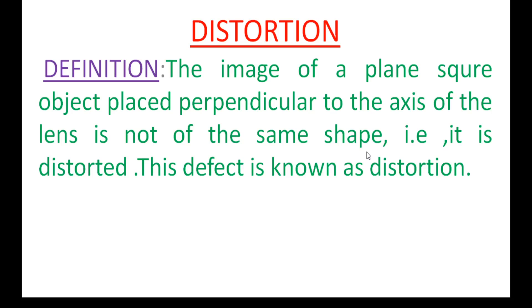What is distortion? This is also one type of aberration like chromatic aberration, spherical aberration, coma, and astigmatism. Here is the distortion diagram.